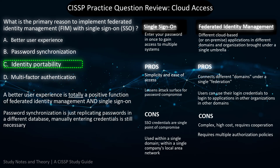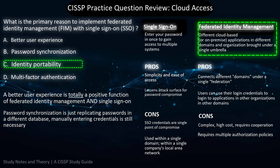Choice C is identity portability. You can port your identity — take your identity to other places. So far this feels like a reason for both federated identity and single sign-on: federated identity allows access to services across multiple domains and organizations, while single sign-on allows access to different applications with just one set of credentials. Choice C is the correct answer, by the way.